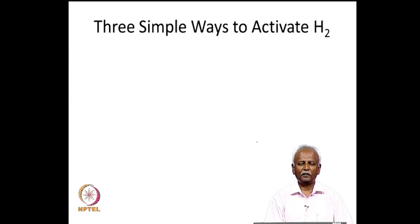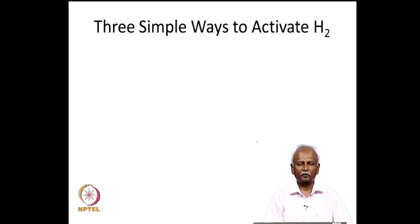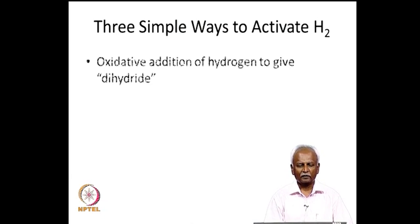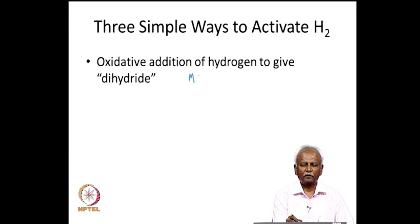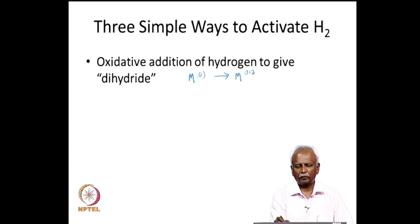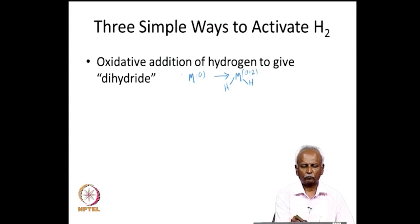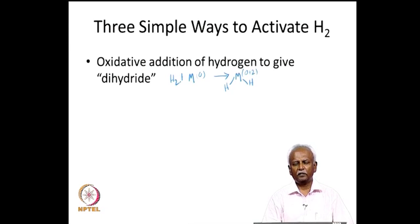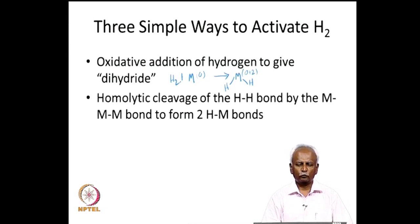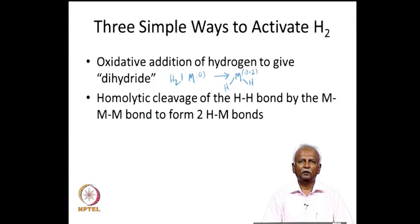Let us back up a little and talk about the ways to activate hydrogen. There are three ways to activate hydrogen using a transition metal complex. The first is the oxidative addition of hydrogen to give a dihydride. In this case the metal, which is in the 0 or n oxidation state, goes to a +2 oxidation state and then has two bonds to hydrogen — you change the oxidation state of the metal by +2 and make it a dihydride.